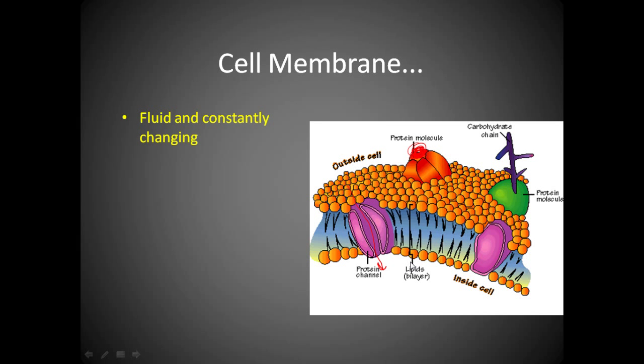The cell membrane has all these proteins on it. The reason we go through this is because a lot of diseases and a lot of drugs deal with the cell membrane. Drugs are going to interact with the cell membrane, cause changes in the cell, and a lot of diseases are caused because something has gone wrong within the cell membrane.